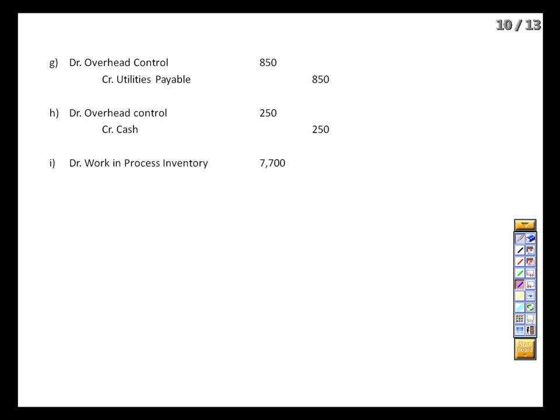Now we've accumulated all those overhead costs and it's time to do our application. We would have done that analysis to come up with an overhead rate per labor hour — and let's say that yielded a rate of $3.50 per direct labor hour, as given in the problem. We had 2,200 direct labor hours, so that's going to give us overhead costs of $7,700. That goes into work in process and comes out of overhead control — the temporary account being reduced. To the extent that our $3.50 rate was too high or too low, we'd close that variance into cost of goods sold at the end of the period.